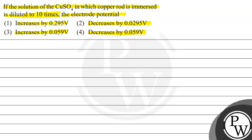In this particular question, we want to find the change in electrode potential and the key concept of this question is electrode potential. It is basically the potential difference between the metal and its ion in the solution.